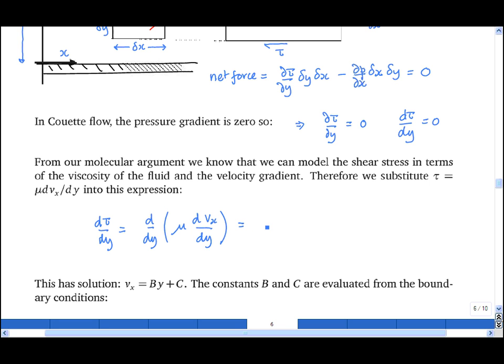And that's equal to mu d squared v_x by dy squared if, and only if, mu is uniform in space, i.e. does not change in space. And that, we know, must be equal to zero.